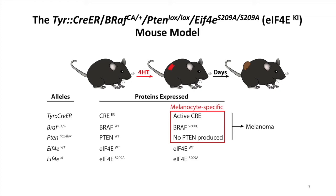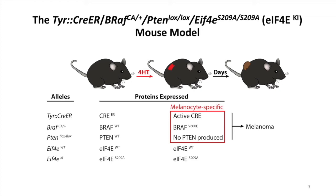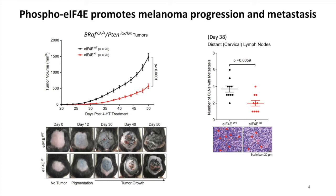In order to study this, we generated an immune-competent knock-in mouse model, where a tyrosinase-Cre-ER system allows us to induce melanoma, and at the same time, EIF4E harbors an S209A mutation so it cannot be phosphorylated. Using this model, we firstly show that compared to the EIF4E wild-type mice, the knock-in mice have decreased tumor outgrowth and metastasis.